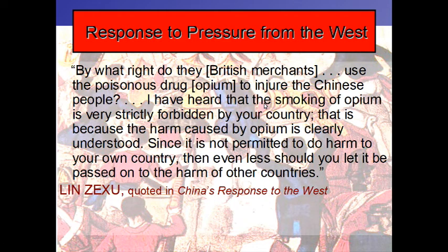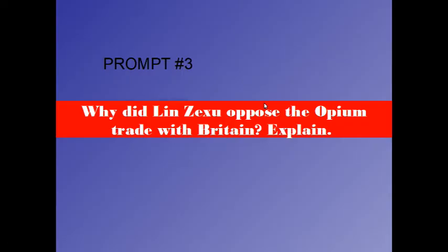Here is a response from Chinese intellectual Lin Seisu, quoted in China's Response to the West: 'By what right do they — the British merchants — use the poisonous drug opium to injure the Chinese people? I have heard that the smoking of opium is very strictly forbidden by your country. That is because the harm caused by opium is clearly understood. Since it is not permitted to do harm to your own country, then even less should you let it be passed on to the harm of other countries.' Prompt three: Why did Lin Seisu oppose the opium trade with Britain? Use that primary source and write at least a paragraph. Pause.